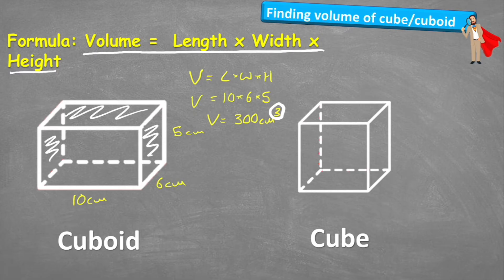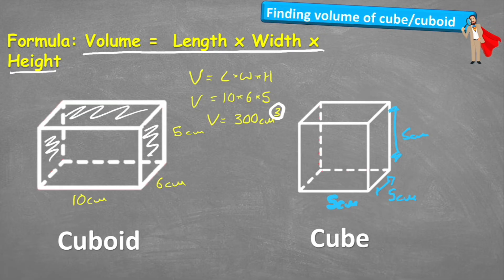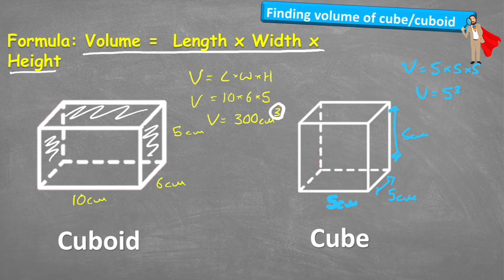Now let's have a look at the cube. A cube is interesting because it's made up of equal side lengths, so if one side is 5 centimetres, then all lengths are going to be 5 centimetres. When putting it into our formula, we get volume equals 5 times 5 times 5, or volume equals 5 cubed. 5 times 5 times 5 is 125, so the volume equals 125 centimetres cubed.